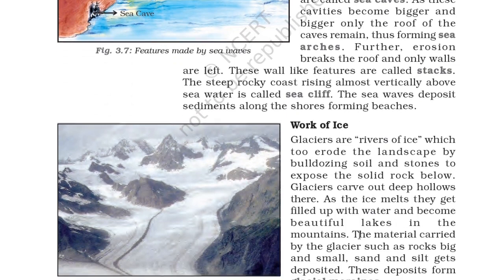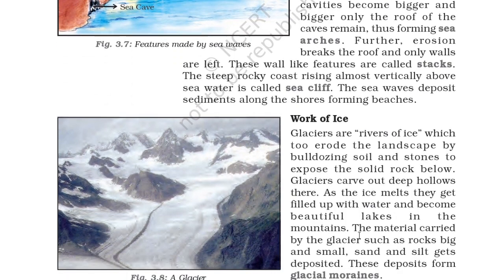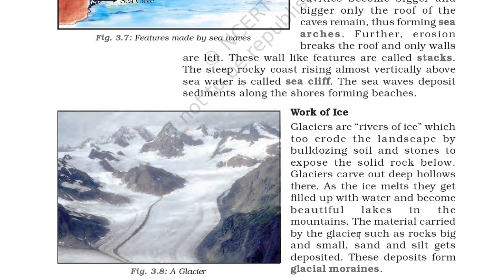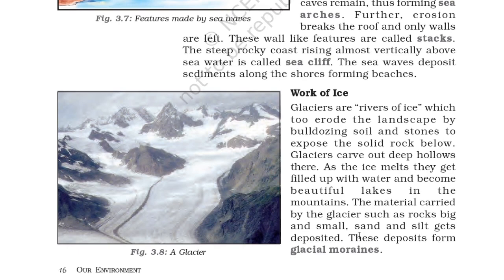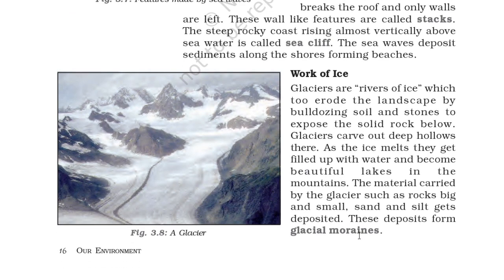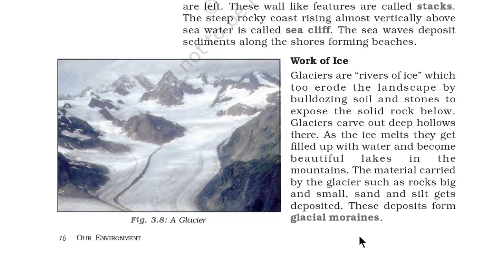Work of ice: glaciers, or rivers of ice, erode the landscape by bulldozing soil and stones to expose the solid rock below. Glaciers carve out deep hollows, and as the ice melts, these get filled with water and become beautiful lakes in the mountains. The material carried by glaciers — rocks, big and small sand, and silt — gets deposited, and these deposits form glacial moraines, as seen in figure 3.8.